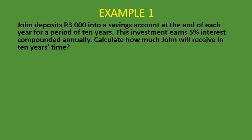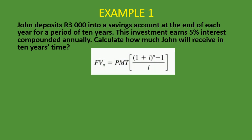Here we are told that John deposits 3,000 rand into a savings account at the end of each year for a period of 10 years. This investment earns 5% interest compounded annually — so once per year, meaning we put the interest rate and number of years as they are. Calculate how much John will receive in 10 years' time. Since deposits are made at the end of each year, this is an ordinary annuity. So let's take out our formula.